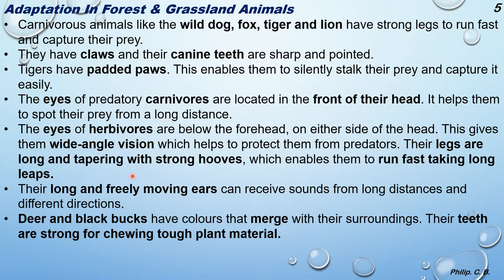Herbivores like antelopes, deer, and black bucks have wide-angle vision to see predators while eating grasses. Their ears are long and freely movable, able to receive sounds from long distances and different directions. Deer and black bucks have colors that merge with their surroundings, and their teeth are strong for chewing plant material like grass and leaves. Their coloring provides some degree of camouflaging to escape from predators.